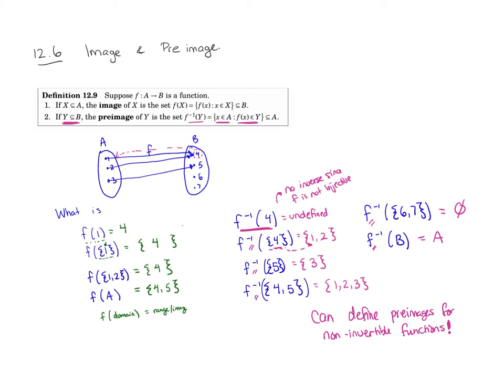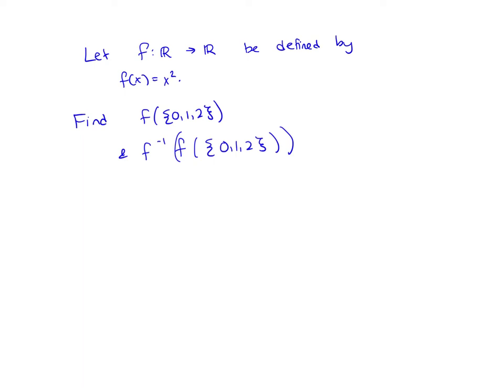Whenever I have a single element whose pre-image is multiple elements, that's how I know that my function was not one-to-one. That's exactly what it means. So you can sort of think about whenever your sets increase in size when you take a pre-image, that's a good indicator that your function is not one-to-one. So I encourage you to think about those sorts of things that we can show.